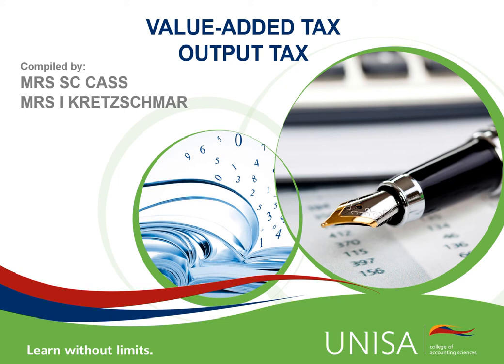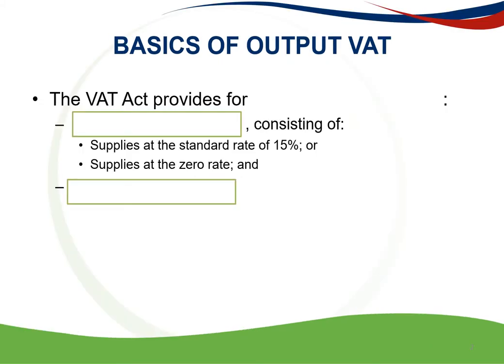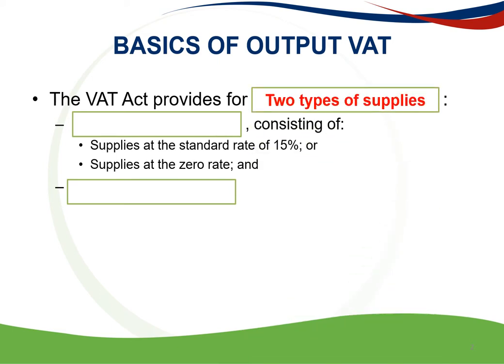This video contains the inner workings of Output Tax. As mentioned in the background VAT video, the VAT Act provides for two types of supplies: taxable supplies, consisting of supplies at the standard rate of 15% or supplies at the zero rate, as well as exempt supplies. The zero rating of a supply always takes preference over it either being exempt or standard rated.